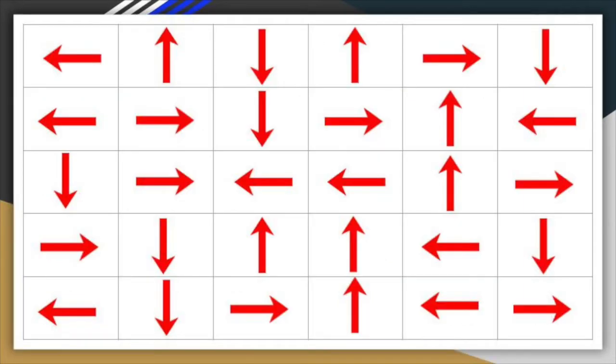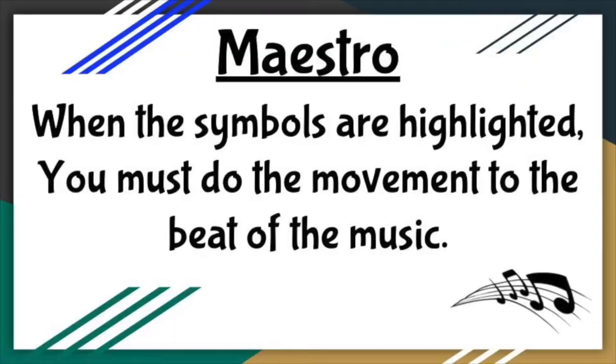In the game you will see a grid like this. The symbols will then begin to highlight going from left to right. When they do, you must move to the beat of the music and do whatever movement the symbols tell you to do.